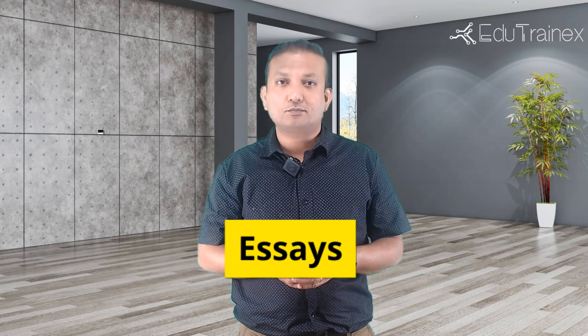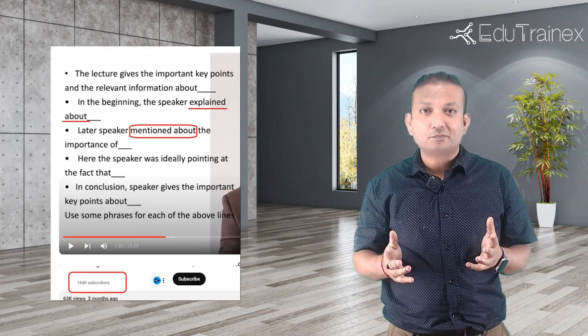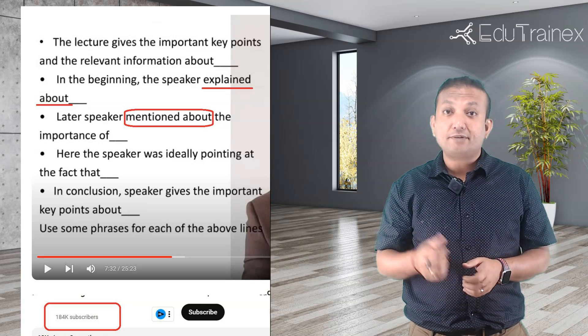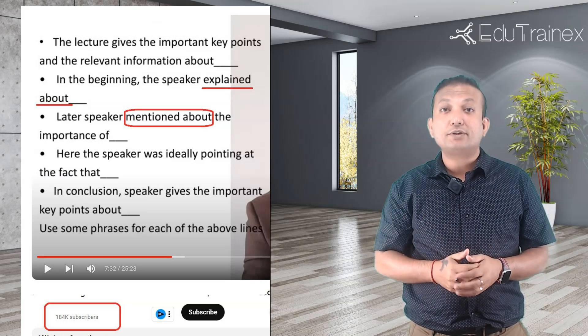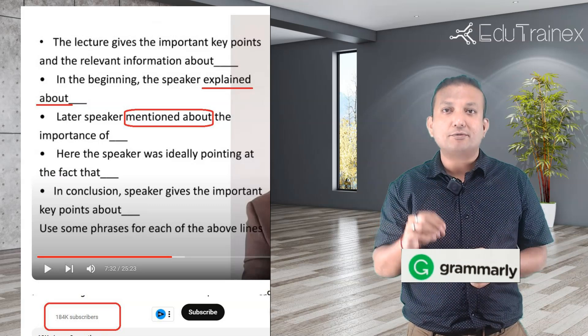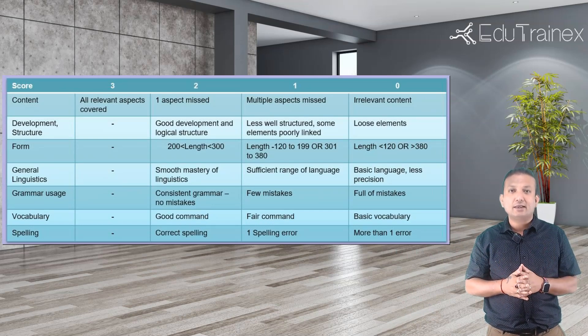Let's talk about essays. People just go to YouTube, select the top channel, and blindly copy templates without even checking the PTE scoring criteria. And sometimes those channels give you wrong templates that have grammar errors — can you believe that? A popular channel with close to 2 lakh subscribers has grammar errors in two sentences of their summarize spoken text template. Go to grammarly.com and check it yourself. The PTE scoring guide for essays has around 7 different scoring criteria, and using just any template without proper thinking is a major mistake.